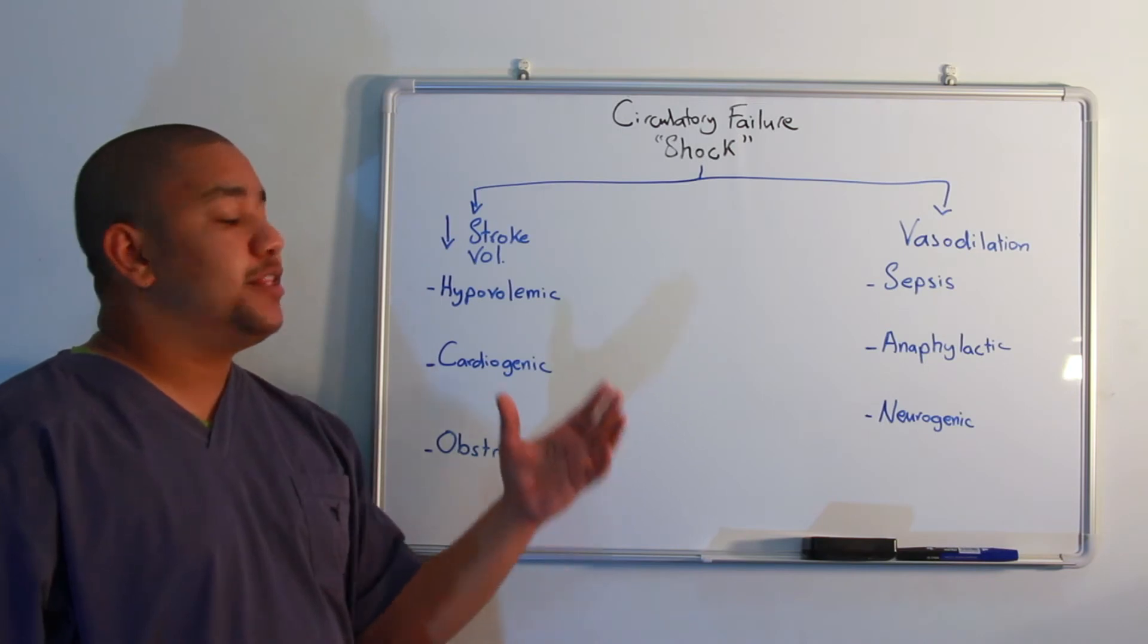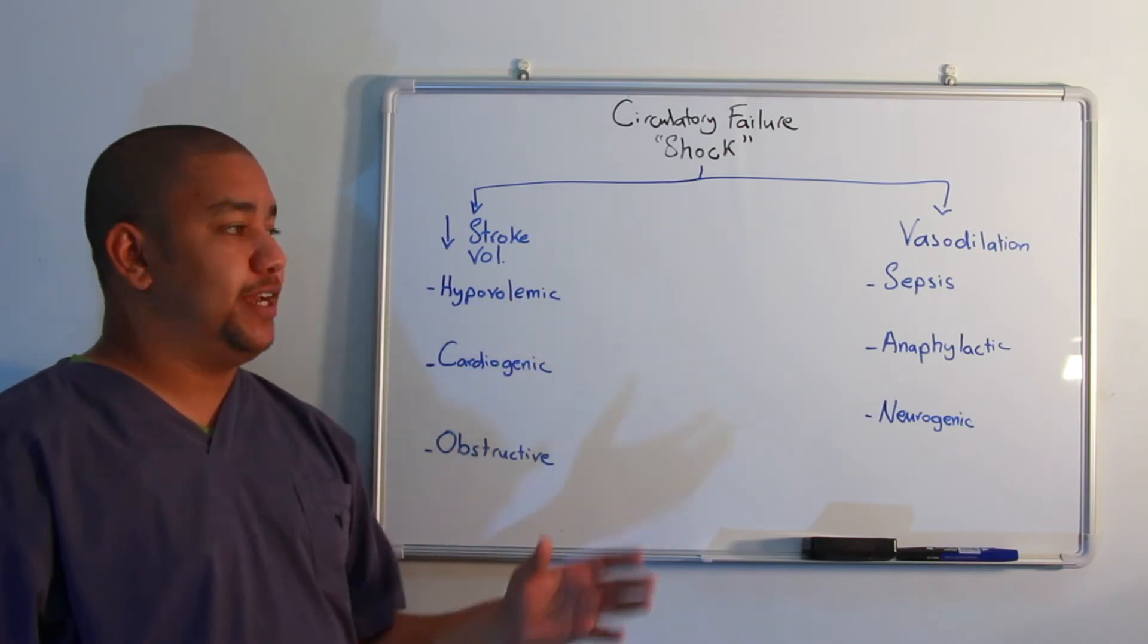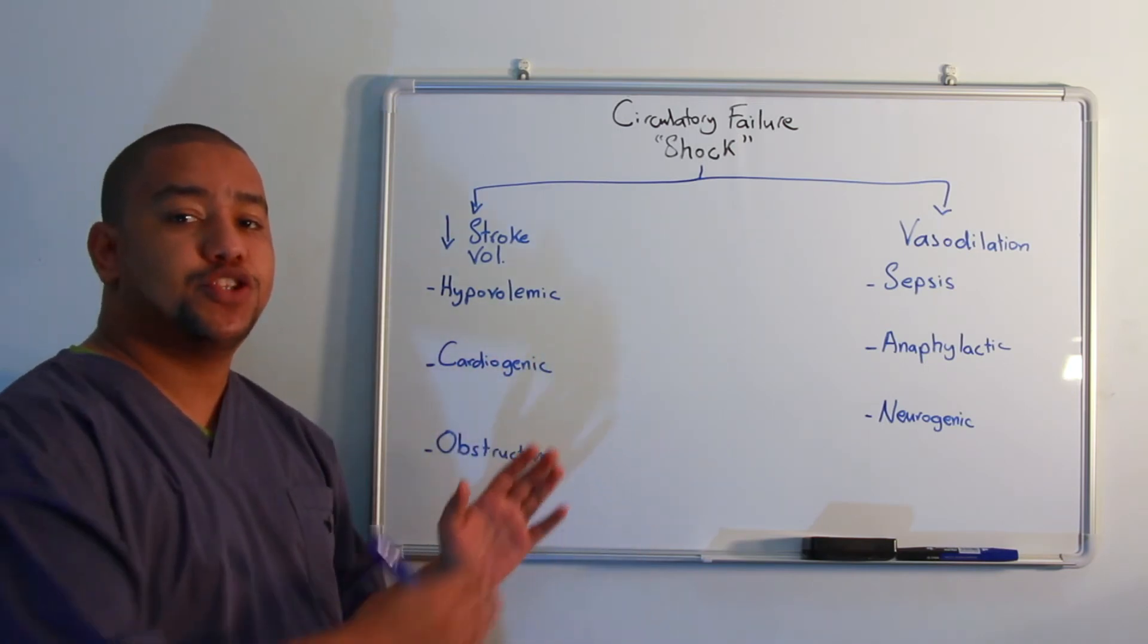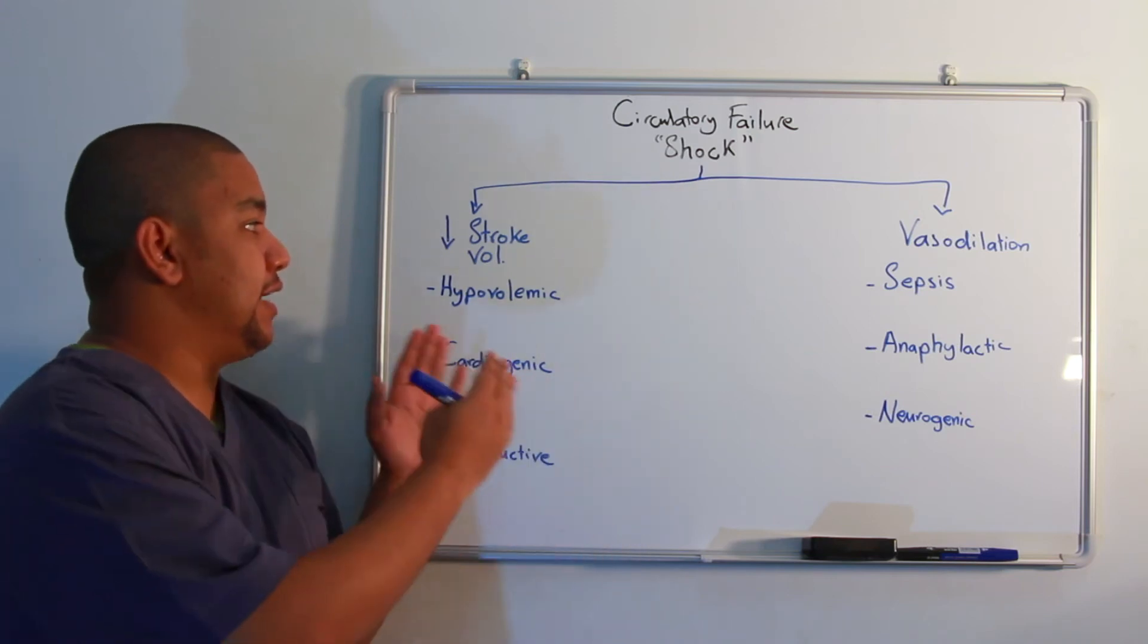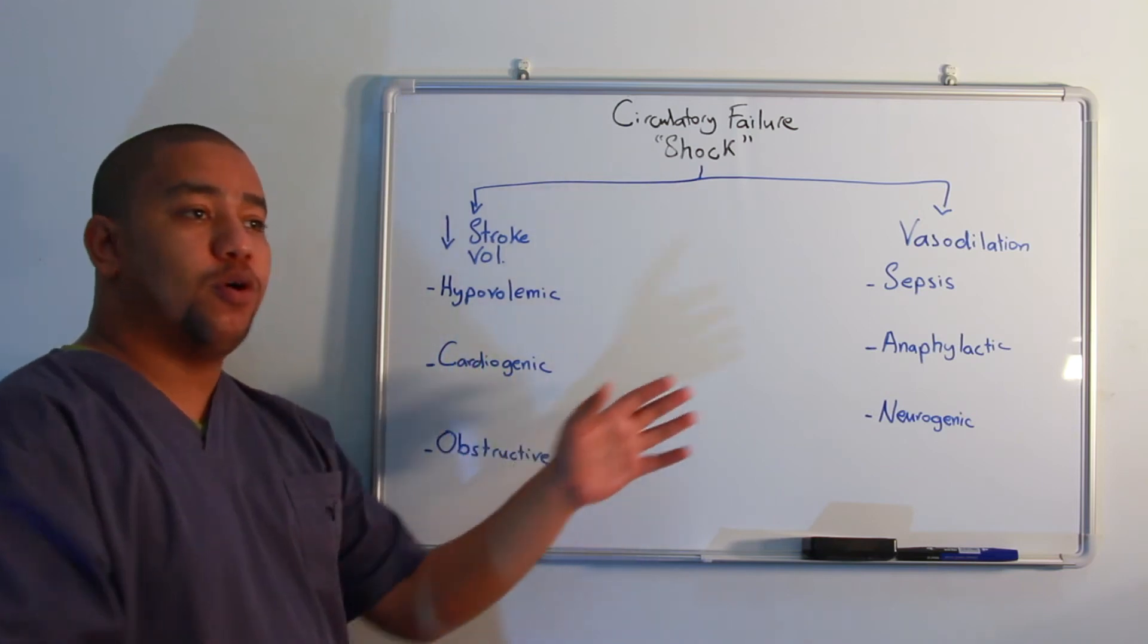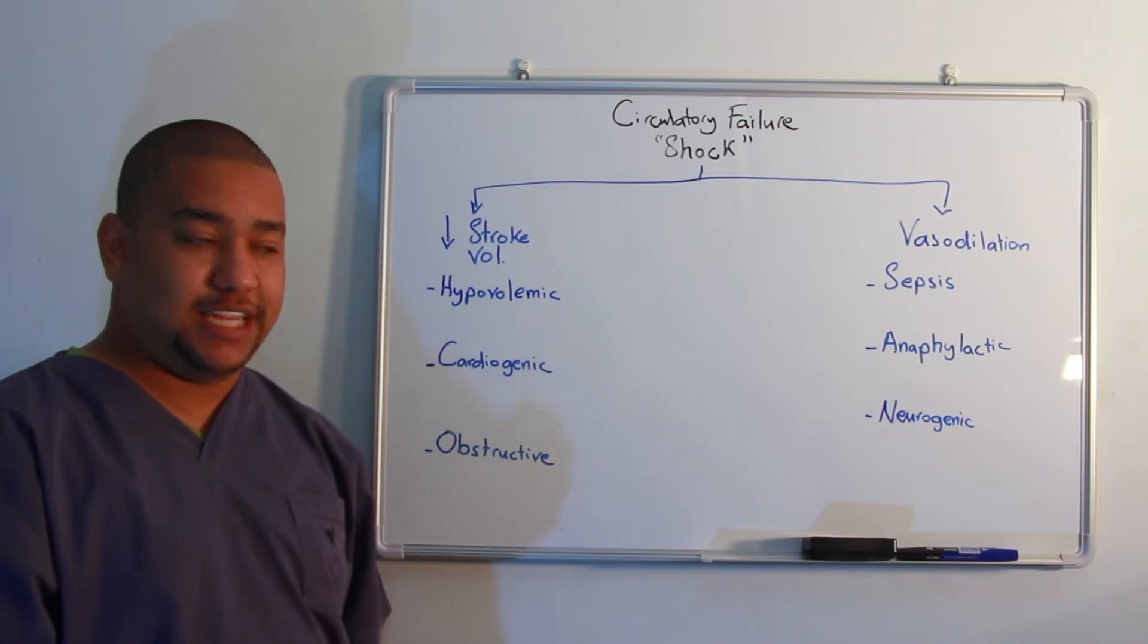When categorizing the causes of circulatory failure, one can put them into two broad categories: a decrease in stroke volume or a systemic vasodilation.